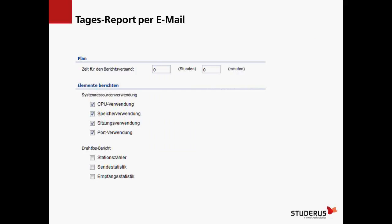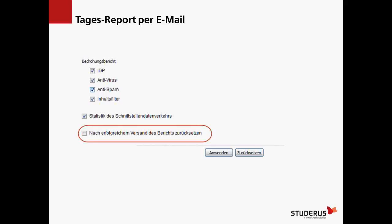In dem Report können ganz unterschiedliche Sachen enthalten sein, auch System-Ressourcen. Interessant sind die UTM-Dienste – was allenfalls blockiert worden ist. Ein wichtiger Punkt ist der rote eingekreiste Bereich: Was macht man, wenn der Report zugestellt worden ist? Wenn 'Reset Statistics after sending report' angehakt ist, wird die Statistik auf 0 zurückgesetzt. Wenn man am nächsten Morgen schaut, alles ist auf 0 und das Gefühl hat, der Dienst bringt nichts – dann ist diese Einstellung der Grund. Also hier nur zurücksetzen, wenn man sich bewusst ist, was damit passiert.